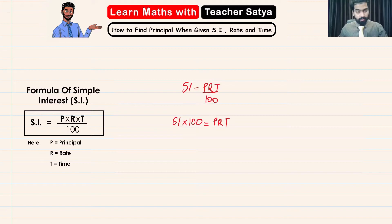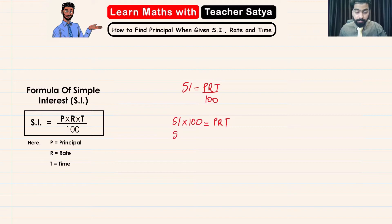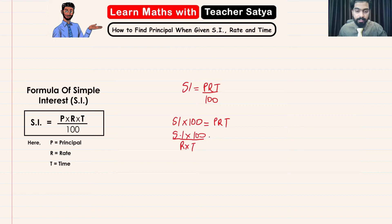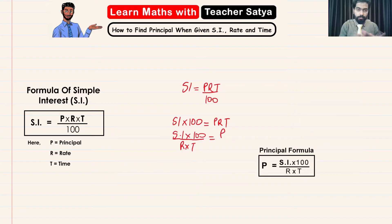Now since I'll be solving for the principal, or P, I will be transposing R and T to the other side. And when I transpose both of them to the other side, I will be changing it to divide. So SI multiplied by 100 divided by R times T is going to give us P. Now this is the formula to find principal, and we will be using this formula to solve a few questions.